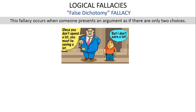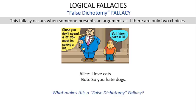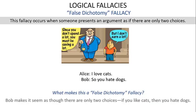The false dichotomy fallacy occurs when someone presents an argument as if there are only two choices. Alice says: I love cats. Bob says: so you hate dogs? Bob makes it seem as though there are only two choices — if you like cats, then you hate dogs — which is of course not the case.